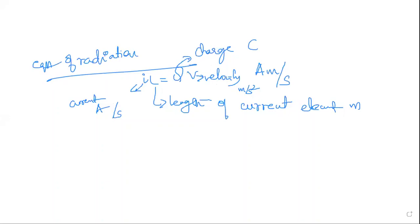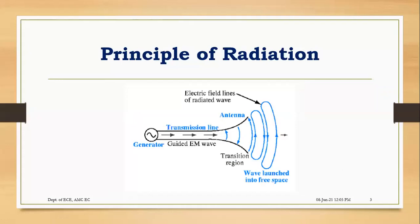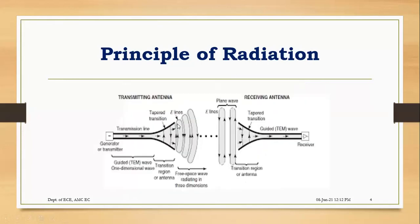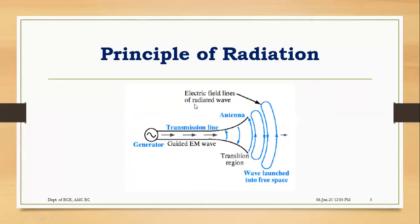Now we'll talk about the principle of radiation — how actually the radiation takes place in the antenna. The process of radiating electromagnetic waves into free space is called radiation. This principle of radiation is illustrated with a figure. The figure shows a generator, a transmission line, and an antenna. The blue lines are the electric field lines of the radiated wave. The arrow direction inside the wave is called the guided electromagnetic wave, and the region elevated to outside is called the transition region.